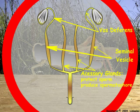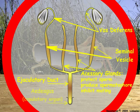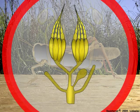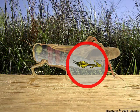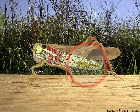Accessory gland secretions may prevent the mated female from mating again by forming a temporary plug or by transferring chemicals that suppress mating behavior. Finally, the sperm or spermatophore are passed through the ejaculatory duct during copulation.